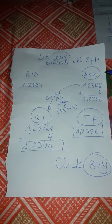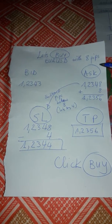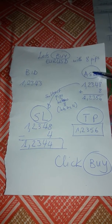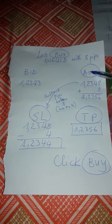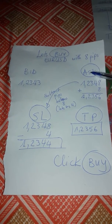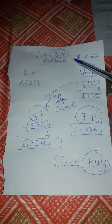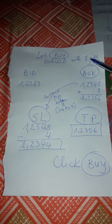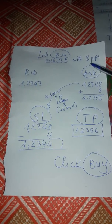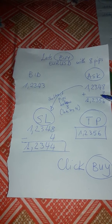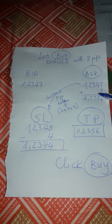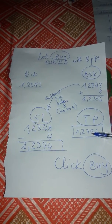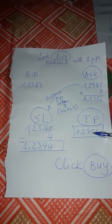Let me show you a buying scenario. We have the ask price — we always use the ask price to buy. So here we are having EUR/USD and we need to buy. We take 8 pips and add to the value on your right to give us our take profit, and this is the answer to our take profit.